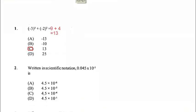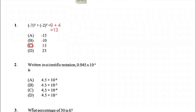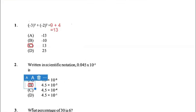Number two: written in scientific notation, 0.045 times 10 to the negative three. Remember with scientific notation it's always trying to write numbers that are too large or too small to a single decimal. 0.045 already has a power of 10 to the negative three, and we move the decimal point two more places to the right, so it becomes 4.5 times 10 to the negative five. Therefore, the answer for two is B.